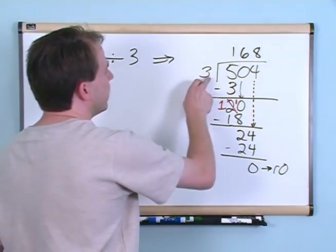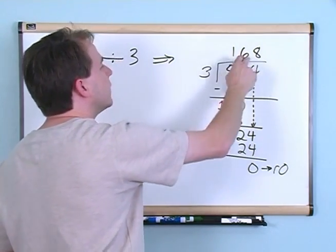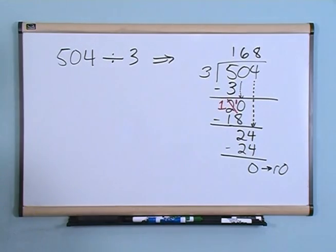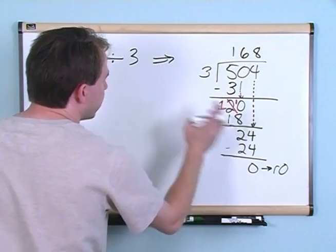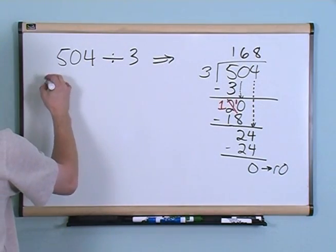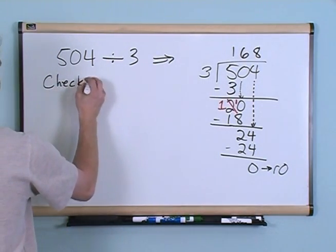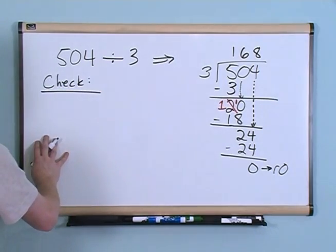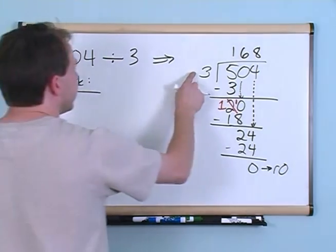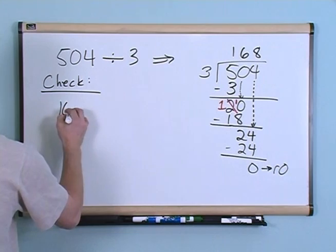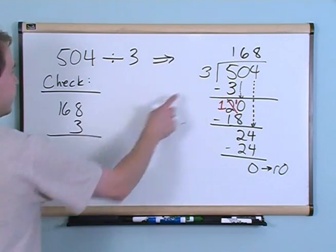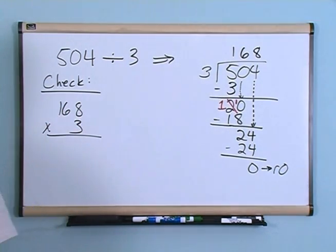So when you take 504 divided by 3, you're going to get 168. It goes an even number of times with no remainder. And if you want to check your answer, which I think you should always do, then all you would have to do is say 3 times 168, and you should get 504.